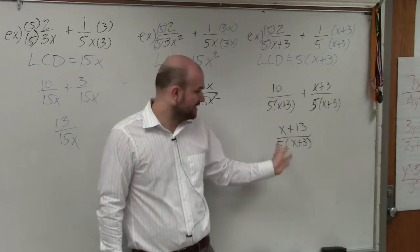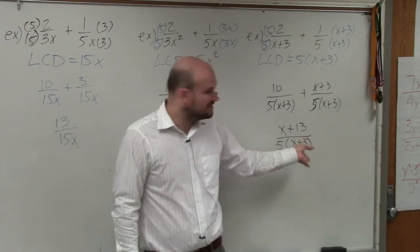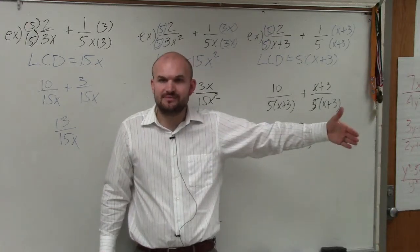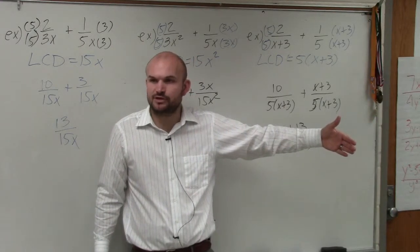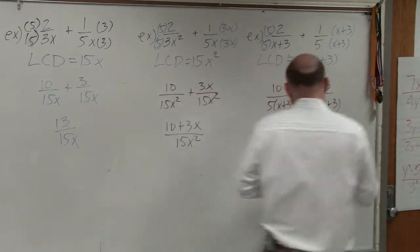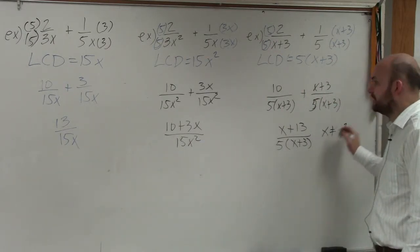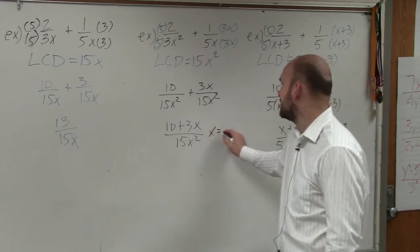The other reason why I don't like to distribute it is because remember when we did constraints? In this case, when you multiply it through, sometimes it's more difficult to identify what your constraints are. Here, you can see that my constraint is x cannot equal -3. And here, x cannot equal 0.